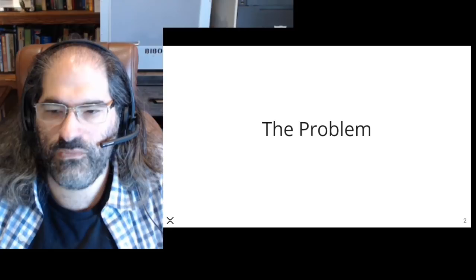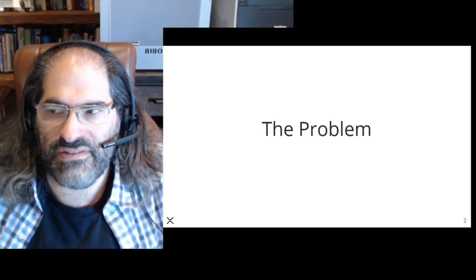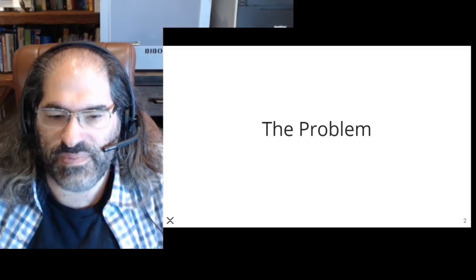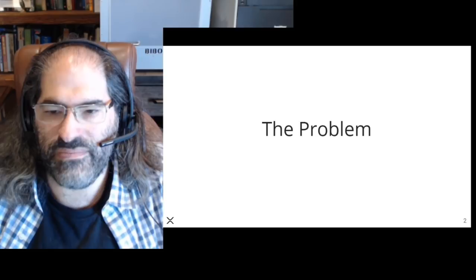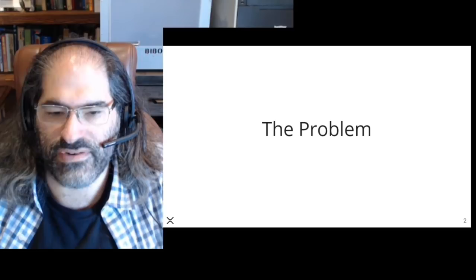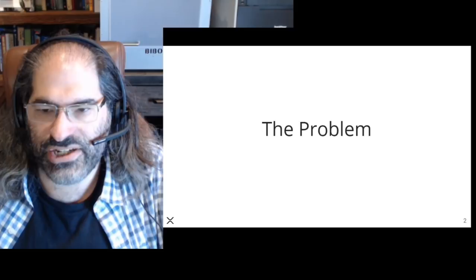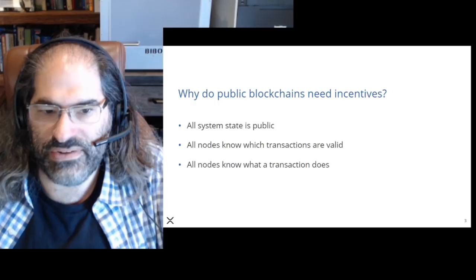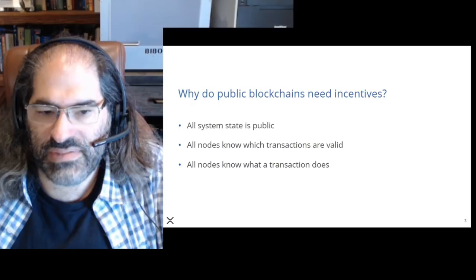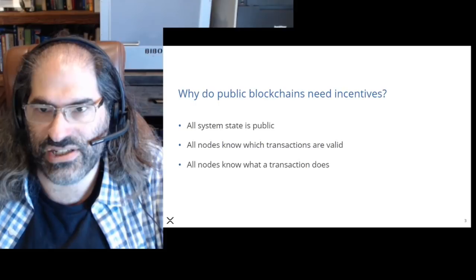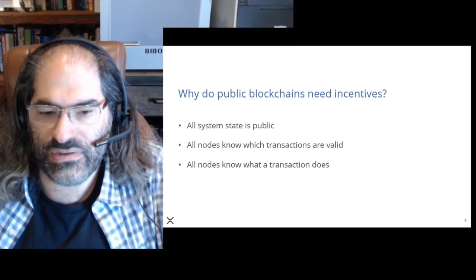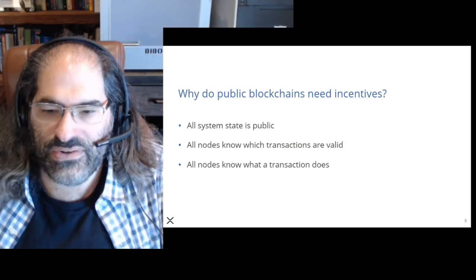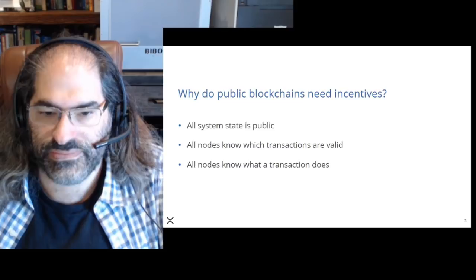What's the problem? What are incentives for? What role do they play? The answer is that eventual consistency is needed for blockchains to be useful — essentially the double-spend problem. If Alice is going to send Bitcoin to Bob, at some point Bob has to know that everybody will agree he's received it. Three properties blockchains have: all system state is public, all nodes know which transactions are valid, and all nodes know what a transaction does.